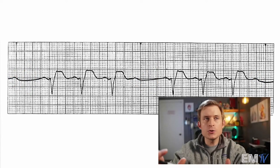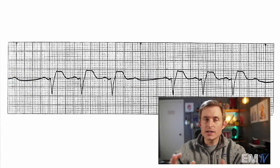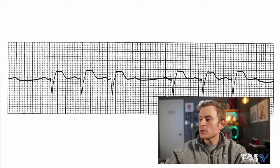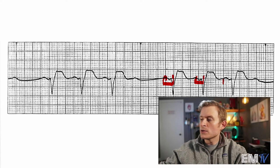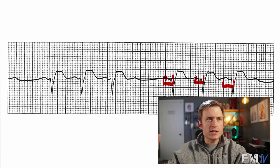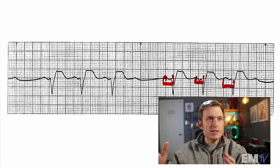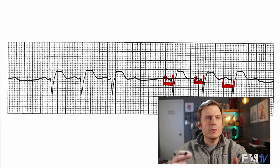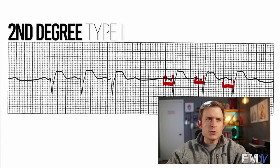To tell the difference between a type 1 and a type 2 second degree heart block, we'll look at the PR interval. In this particular strip, the PR interval is actually very, very consistent. There's no changes here at all — it doesn't get longer and longer before it drops off. So because I have a consistent PR interval and a drop off in QRS with a P wave in front of it, my diagnosis here is going to be a second degree type 2, or a Mobitz 2 heart block.